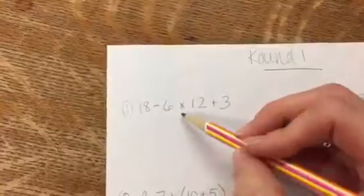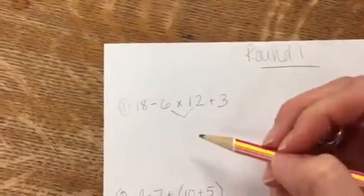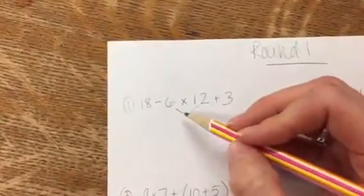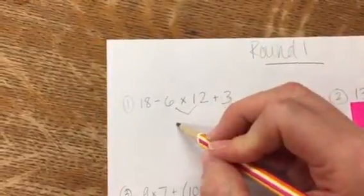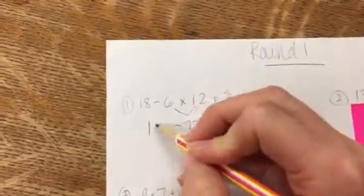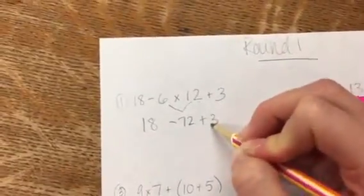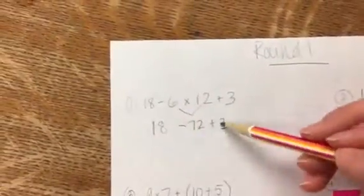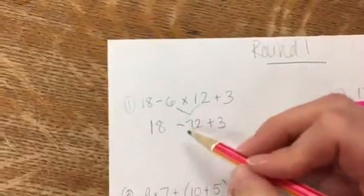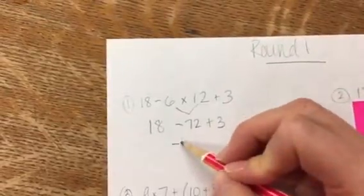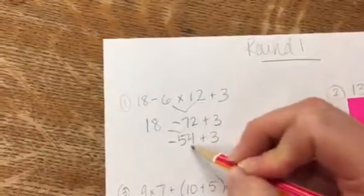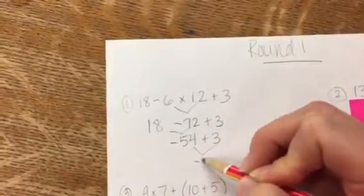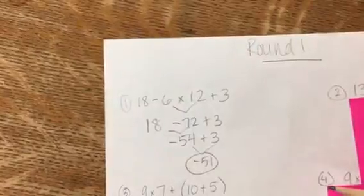So I'm going to start here with my multiplication. I know that negative 6 times 12 is negative 72. By the way, you can use a calculator for these parts of the problem. I bring down the 18, bring down the add 3. 18 minus 72 is negative 54 plus 3. Negative 54 plus 3 is negative 51. That's my answer.